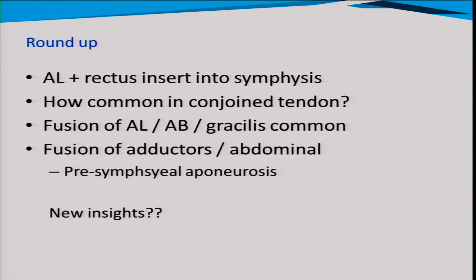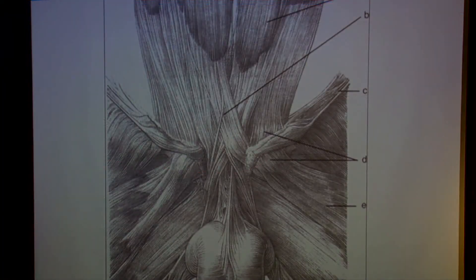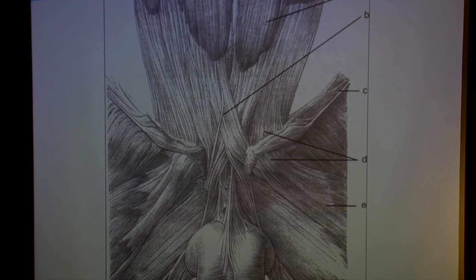I've been telling this as if it's all new, but actually in a review from 2009 by Robertson there was a beautiful picture from 1912 — going back to before the First World War — when Eisler made a sketch showing the true extent of this complexity. So it's actually not new at all; people have known about this for a long while. We can see fibers decussating and continuing between adductors. If you remember one slide from the whole talk, try to fix this in your head, because it gives a true representation of how complex the regional anatomy is and how many connections there are. Thanks for your attention.